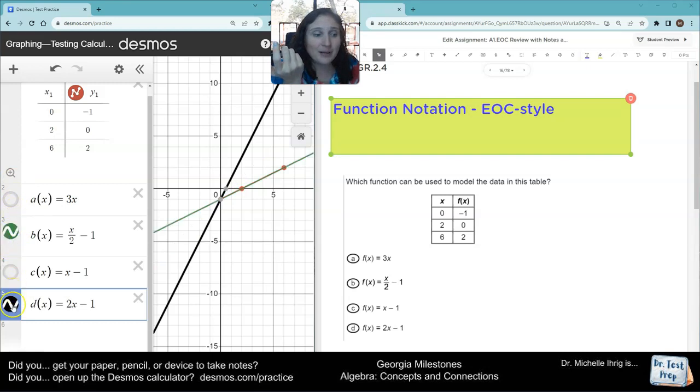So that's why it has to be letter B. Because that's the only one that the points and the graph match perfectly. Graphing calculator. Function notation. It's as simple as that.